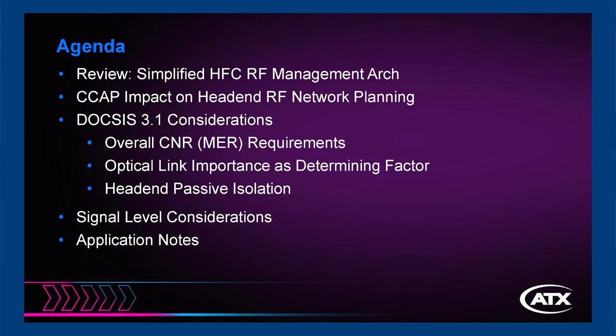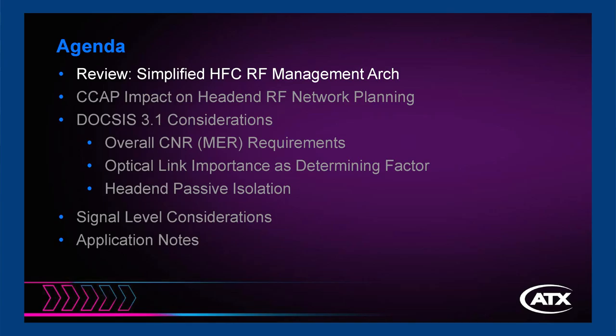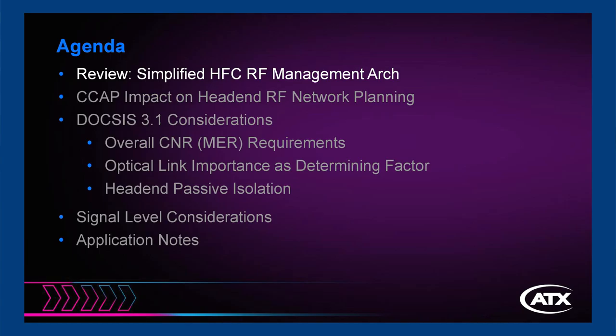With that caveat firmly in place, let's dive right into the subject matter. My intention today is to talk particularly about head-end RF management — the splitting and combining of broadcast and narrowcast signals on the RF level in a head-end. We'll start with a quick simplified architecture to identify what specific part of the network we're talking about, then go into the implications of CCAP, DOCSIS 3.1, extended bandwidth, and higher QAM modulations, and how that impacts our planning.